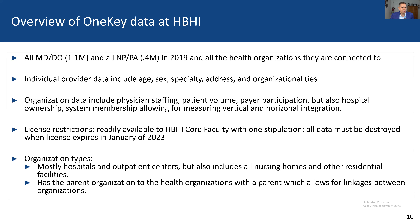The data include age, sex, specialty, address, and organizational ties for providers, plus organizational data including physician staffing, patient volume, payer participation for Medicare and Medicaid, hospital ownership, and system membership. You can triangulate to get a sense of vertical and horizontal integration, but they don't have variables explicitly stating the contractual relationship — you have to deduce some of these relationships. The license is Hopkins-specific, essentially available to anyone who's part of HBHI. The stipulation is a two-year term, and all data must be destroyed when the license expires.